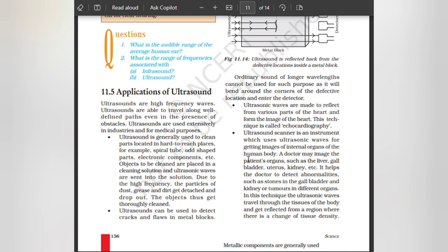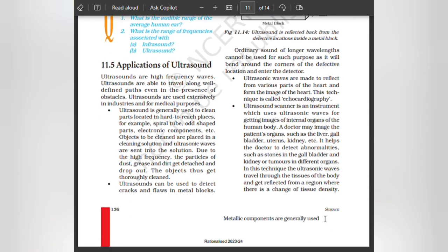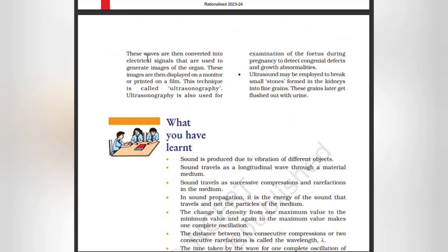An ultrasound scanner is an instrument which uses ultrasonic waves for getting images of internal organs of the human body. A doctor may image the patient's organs such as the liver, gallbladder, uterus, kidney, etc. It helps the doctor to detect abnormalities such as stones in the gallbladder and kidneys, or tumors in different organs. The ultrasonic waves travel through the tissues of the body and get reflected from a region where there is a change in tissue density. These signals are then converted into electrical signals that are used to generate images of the organ, which are then displayed on a monitor or printed on a film. This technique is called ultrasonography. Ultrasonography is also used for examination of the fetus during pregnancy to detect congenital defects and growth abnormalities. Ultrasound may also be employed to break small stones formed in the kidneys into fine grains, which are later flushed out through urine.